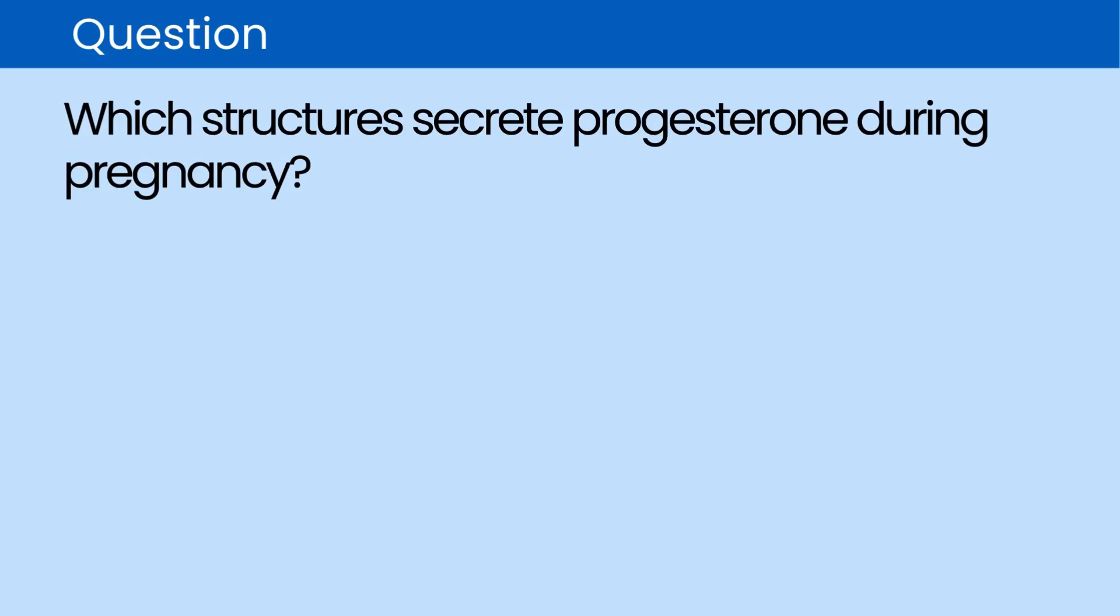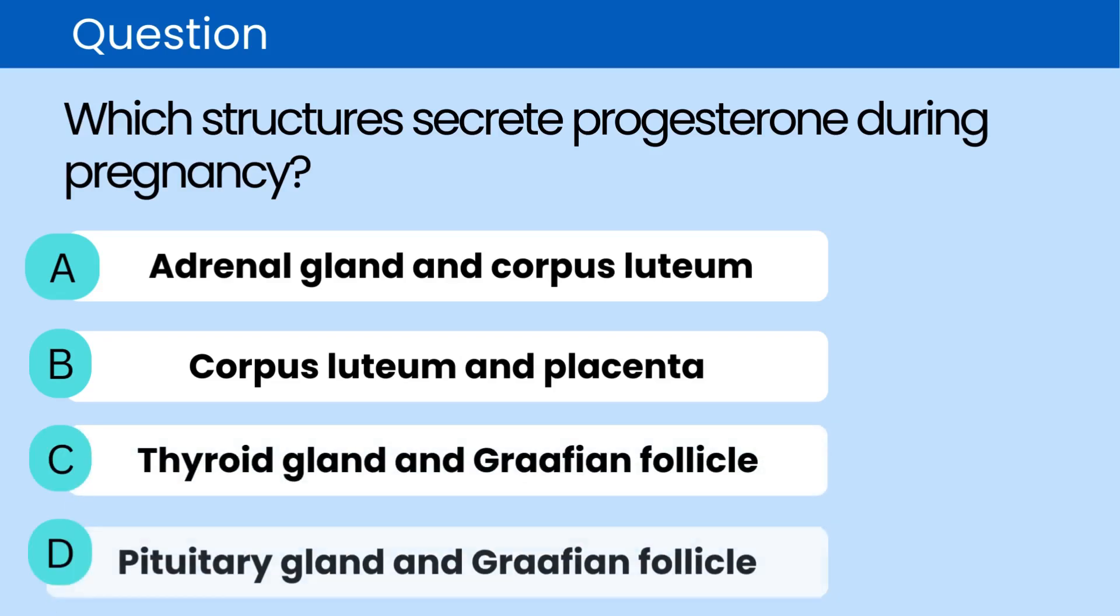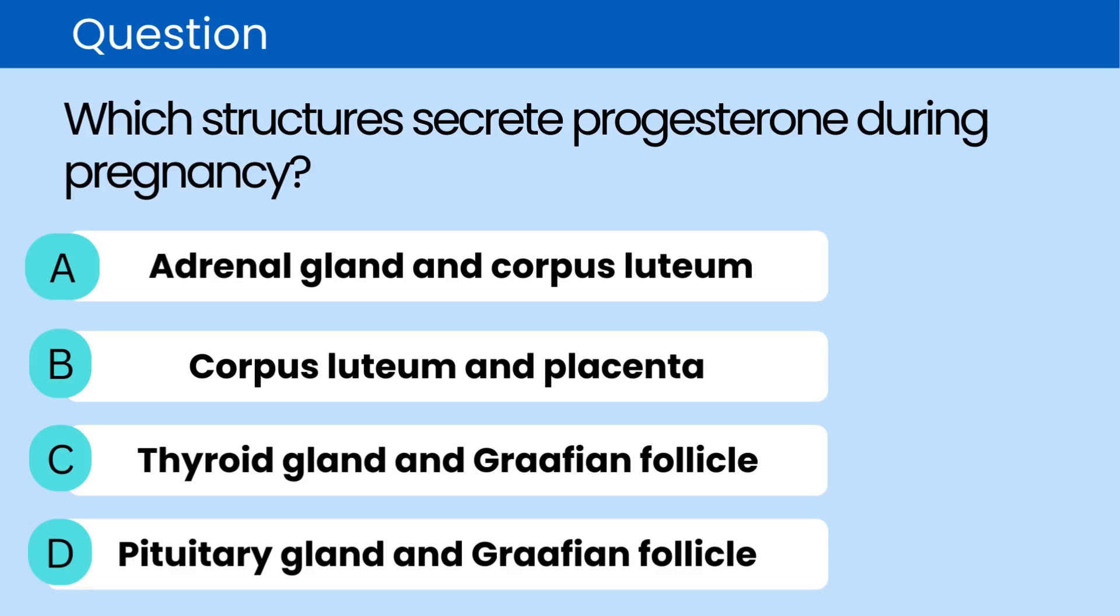Question. Which structures secrete progesterone during pregnancy? A. Adrenal gland and corpus luteum. B. Corpus luteum and placenta. C. Thyroid gland and Graafian follicle. D. Pituitary gland and Graafian follicle.